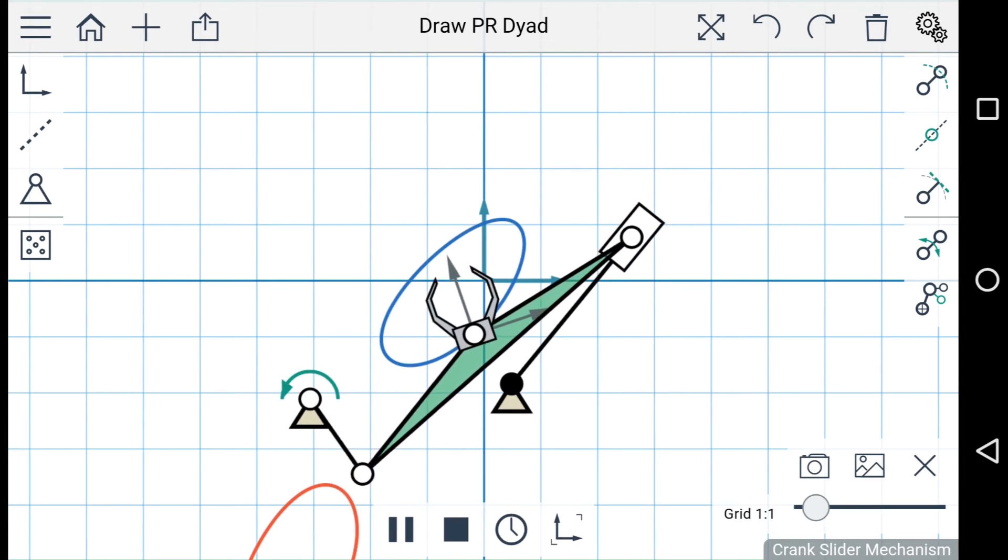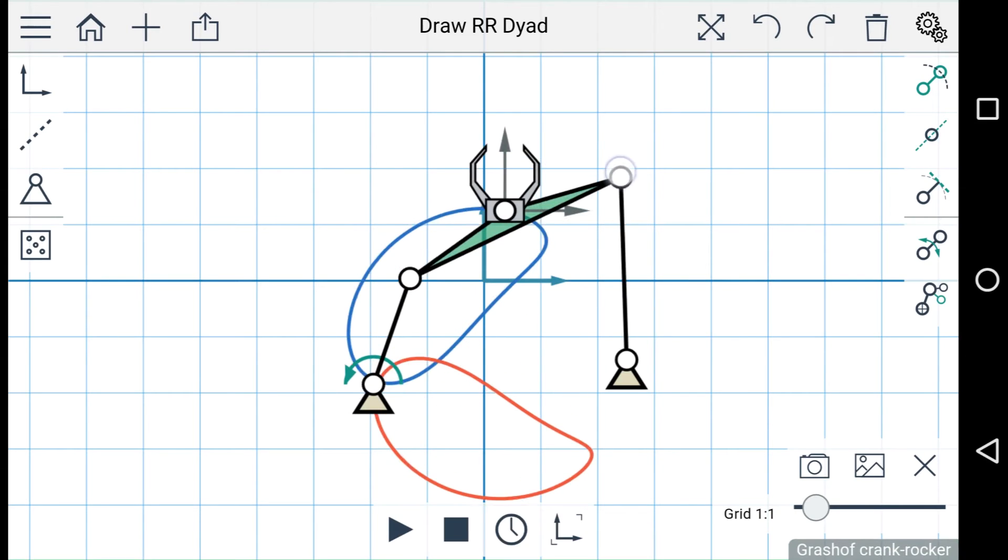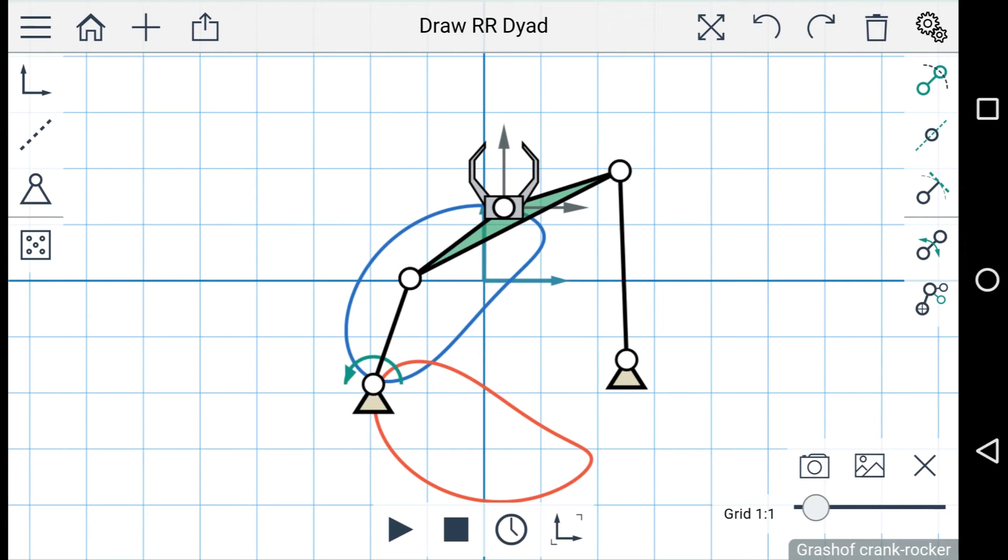I'm going to create another RR linkage here. And you'll notice that once the linkage is generated, two more buttons appear at the bottom of the simulation menu.